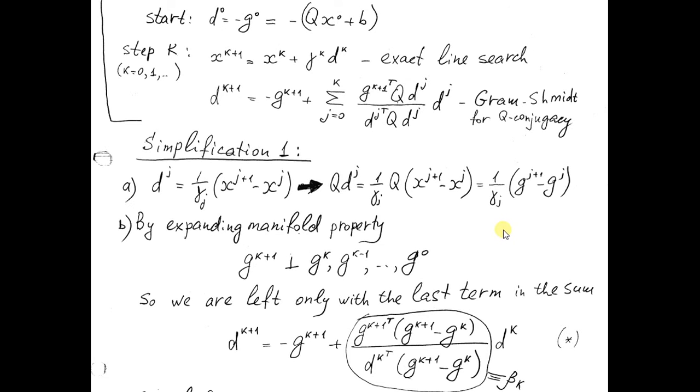There are two possible simplifications of our formula related to expanding manifold property. First we should note that from formula for xk plus 1, we can express dk as xk plus 1 minus xk divided by gamma k. Here is in general form.